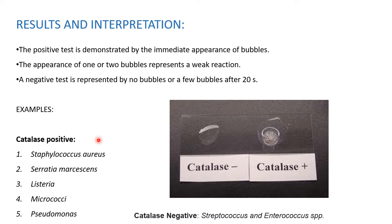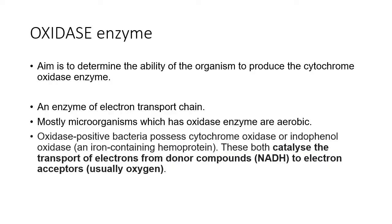Some examples of catalase-positive organisms include Staphylococcus aureus, Serratia marcescens, Listeria, Micrococcus, and Pseudomonas. Catalase-negative organisms include Streptococcus and Enterococcus. Now let's focus on the oxidase test.